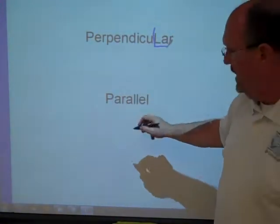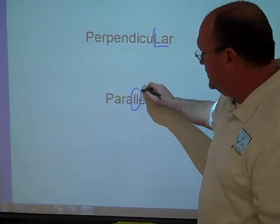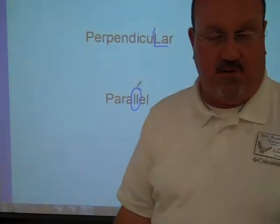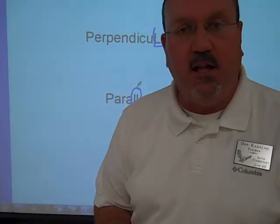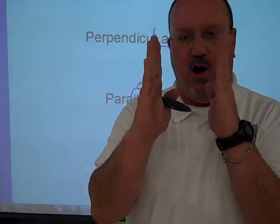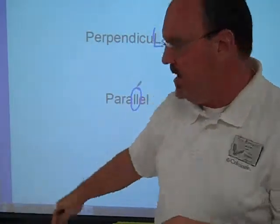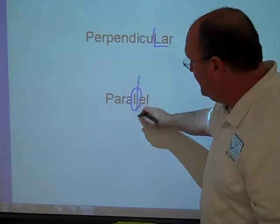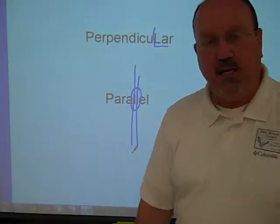Whenever they see the word parallel, they're supposed to circle the two L's. Those two lines—the definition of parallel being two lines that will never or do not touch or meet. They are always like this or like that or maybe at an angle, but they will never touch or meet no matter how far you draw them out. You could draw these lines out forever, and they will never touch or meet.